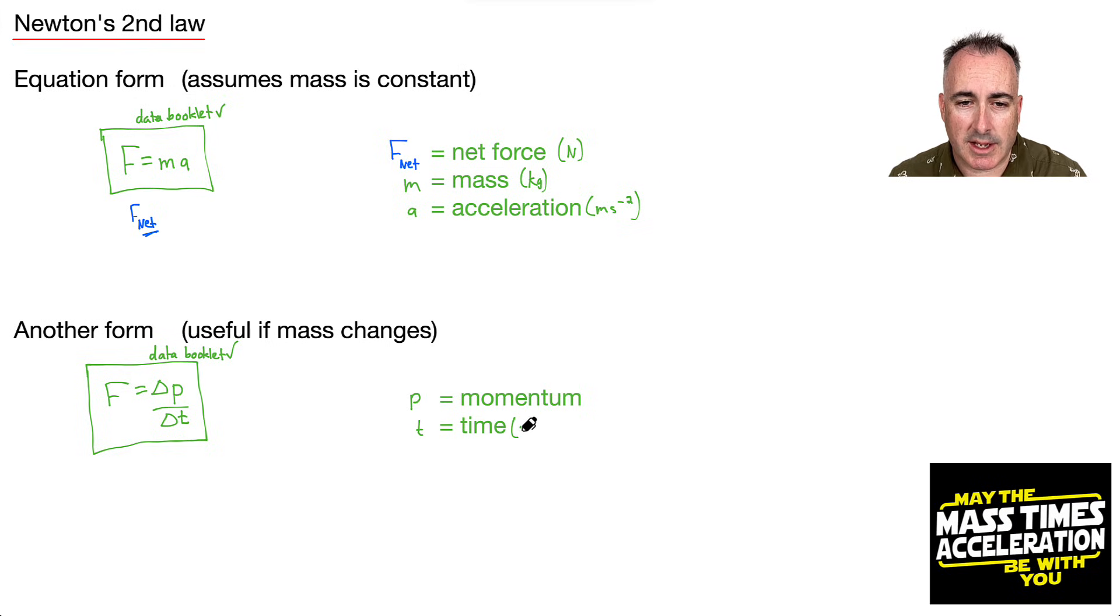So what's P? Well, P is the momentum. T is the time. Time is measured in seconds. Sure, momentum, we're going to go over that in another video, but P equals MV. So M is the mass, that's in kilograms. V is velocity or speed, so it's meters per second.